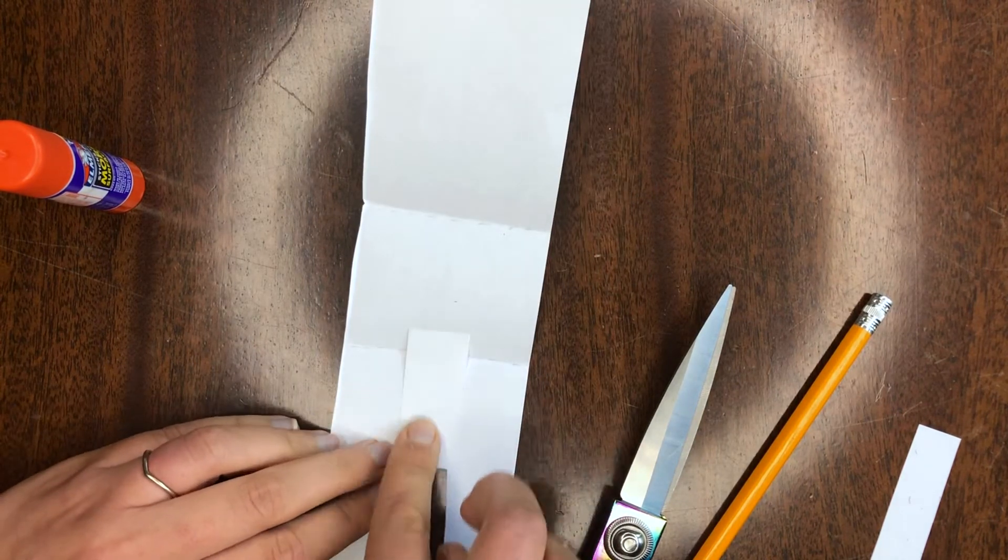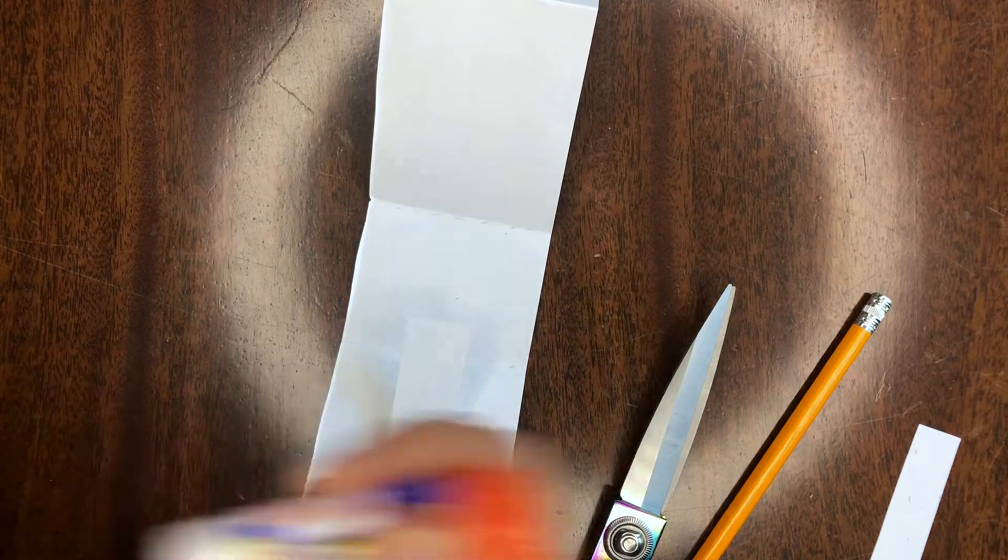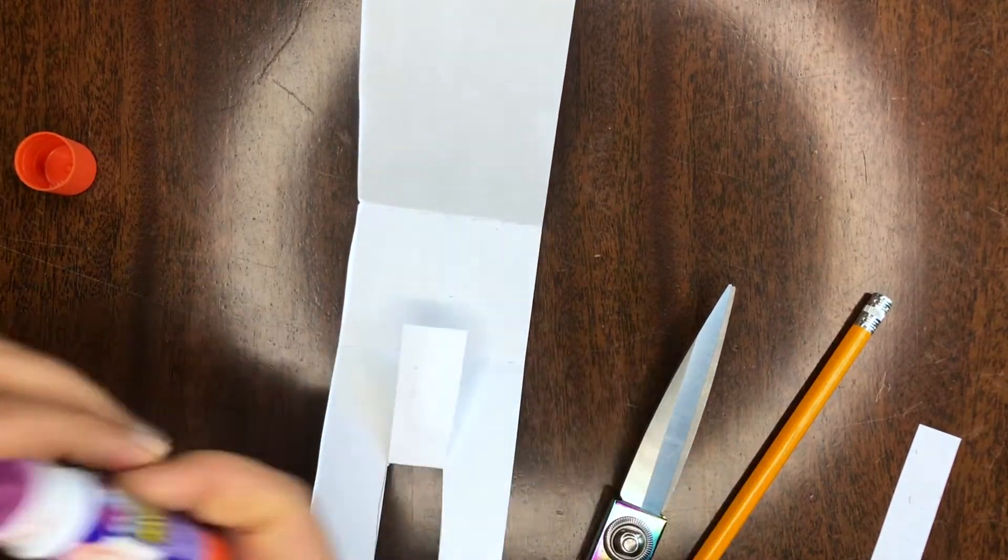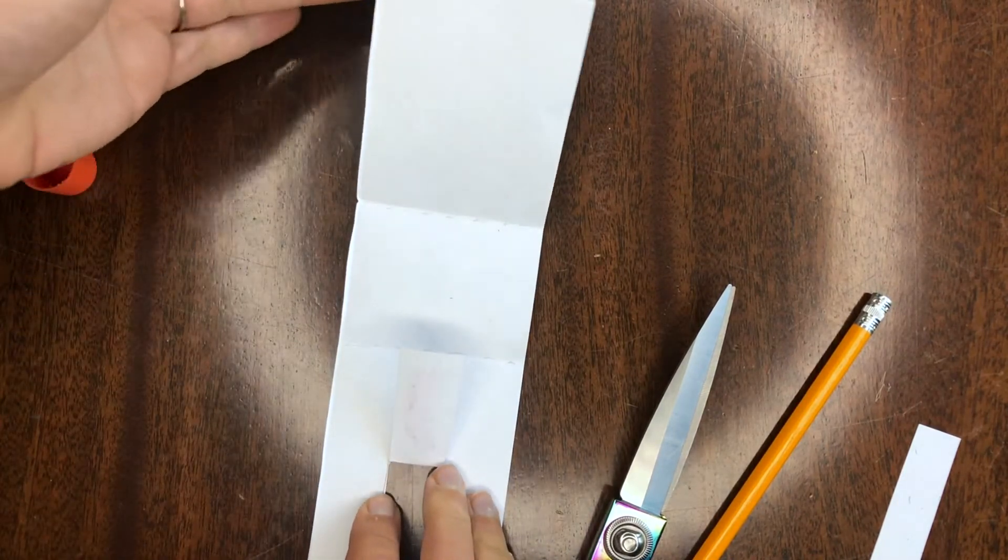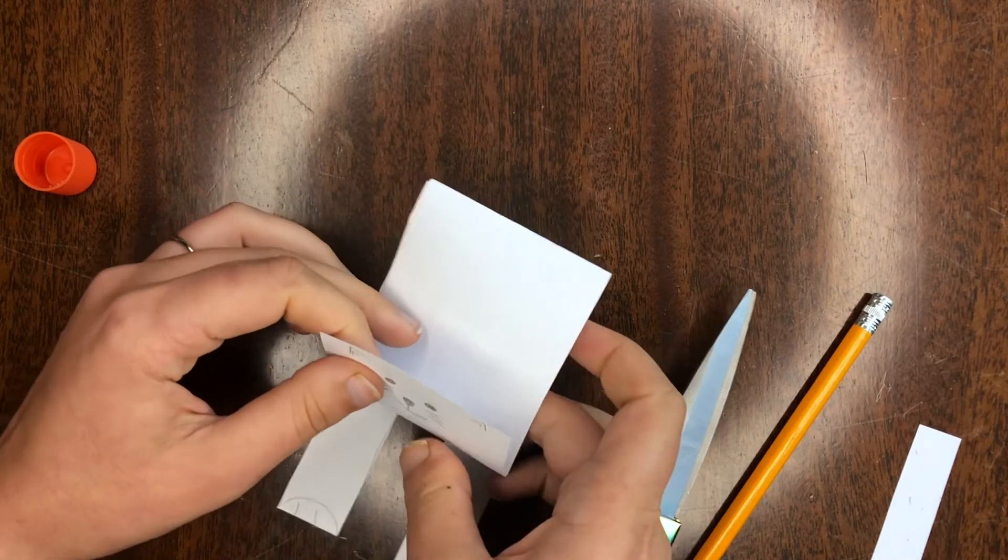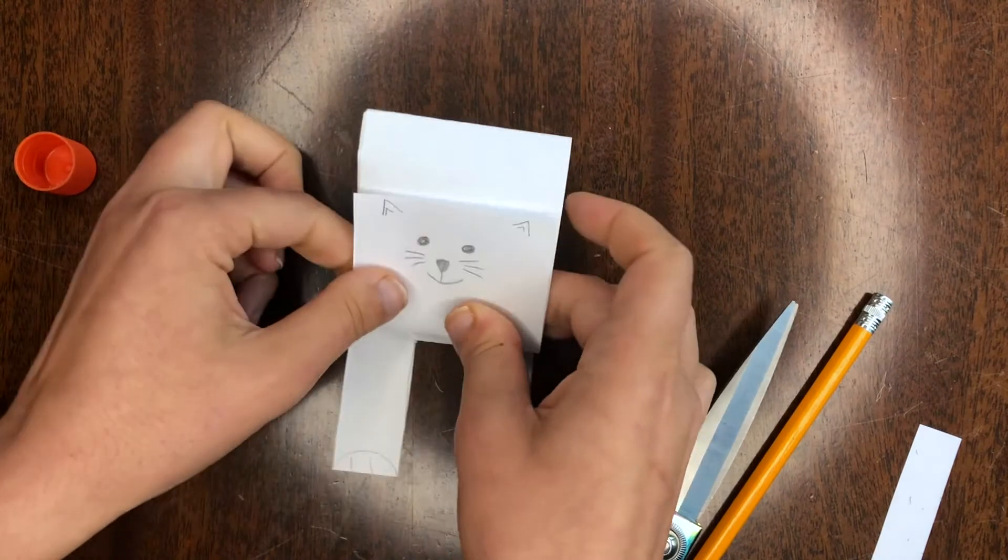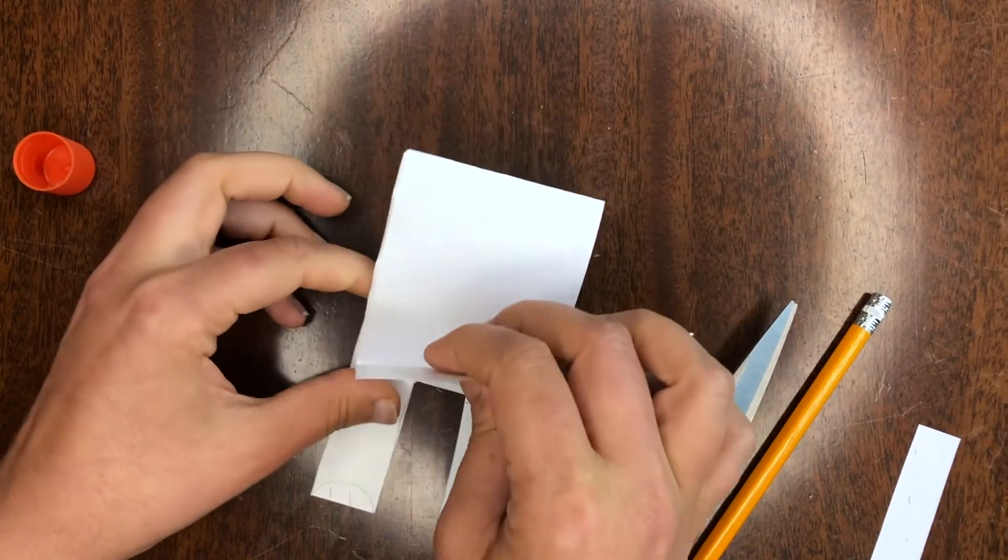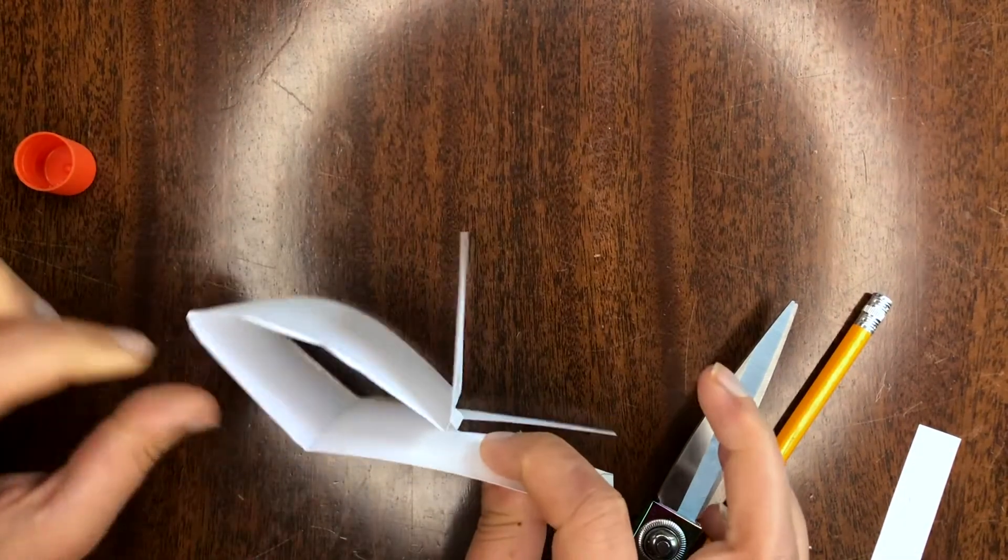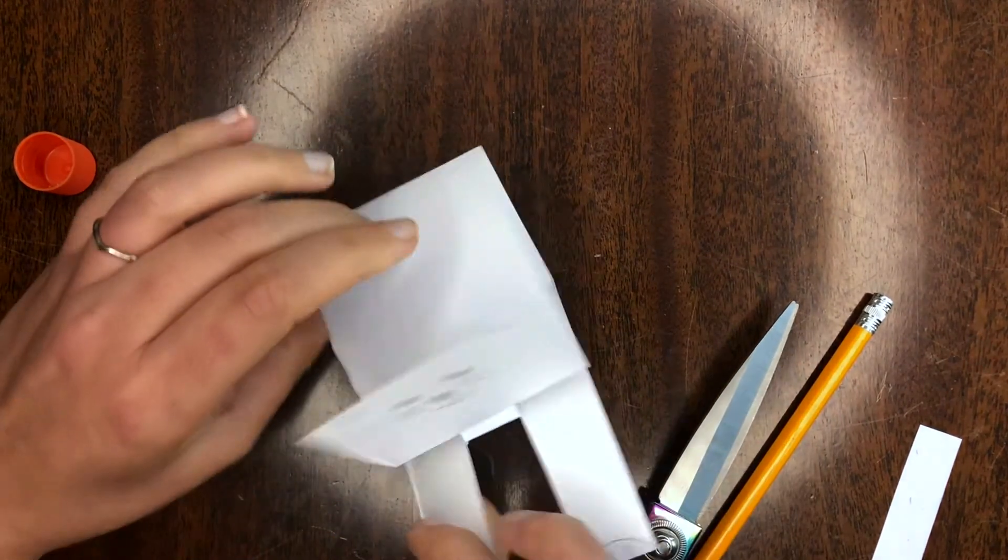We're gonna put glue on the back side of this. We're gonna put glue right there. Now we're gonna bring our head to that piece of glue paper. So he looks like he's stretching forward. You can see that he's stretching forward. I'll put it on the side so you can see what his body looks like over here.